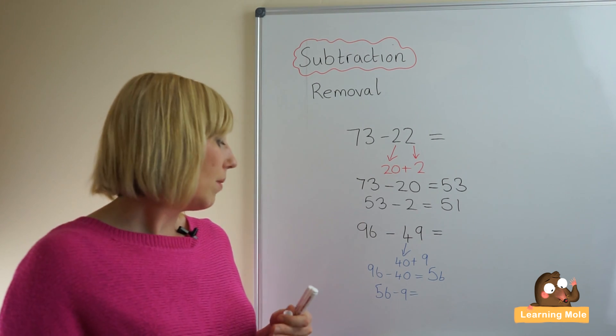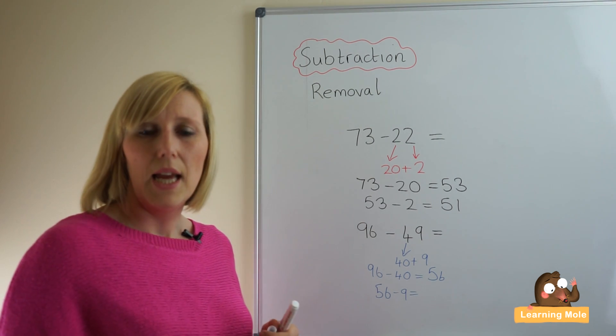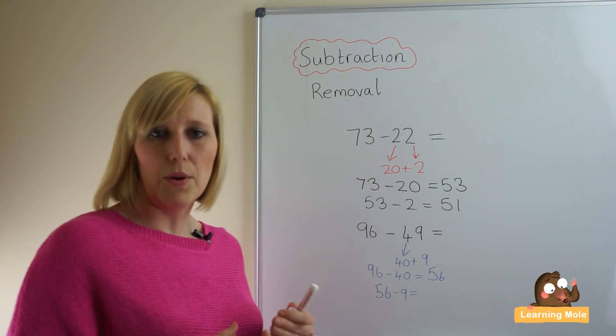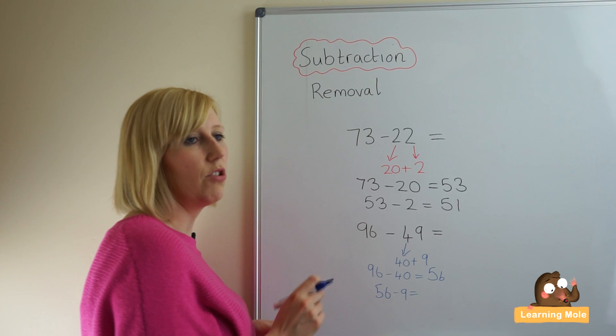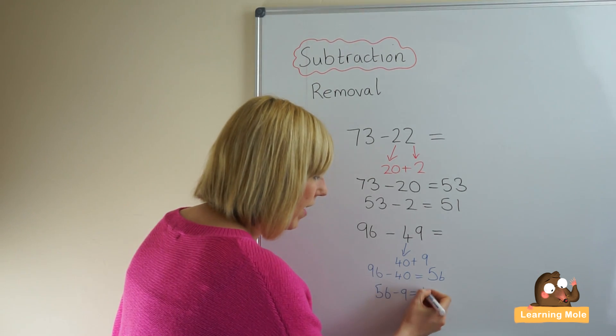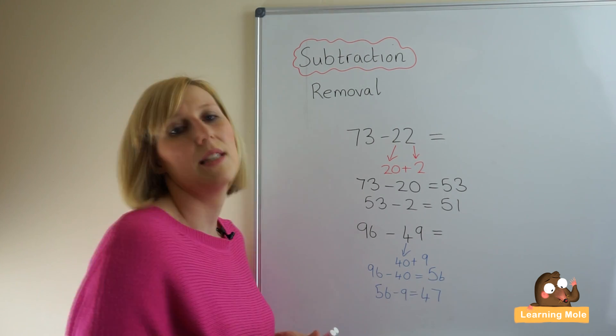So now we will take away the 56 take away 9. If you recall we talked about taking away those chunks, that's what we're going to do here. We're going to take it away by taking away that chunk of 6 to get us to 50, and then taking away our 3 to get us to 47.